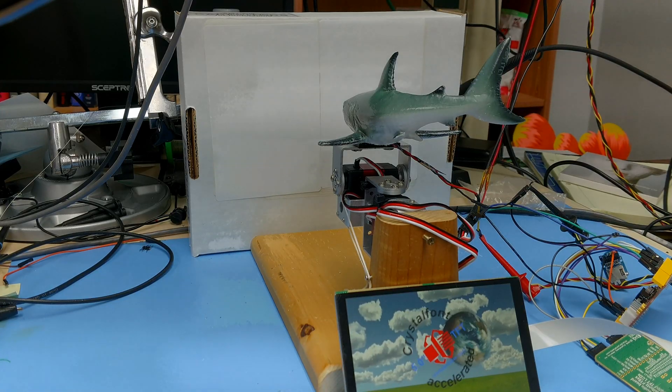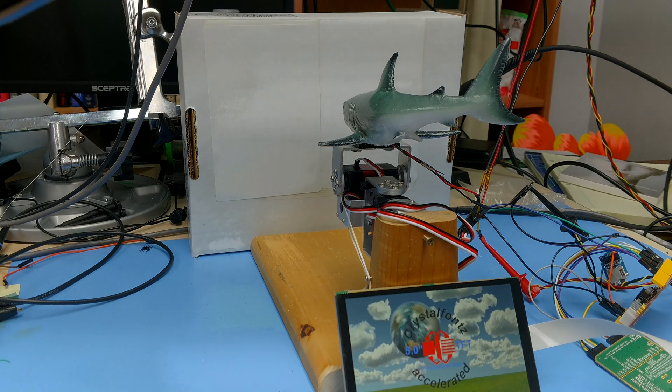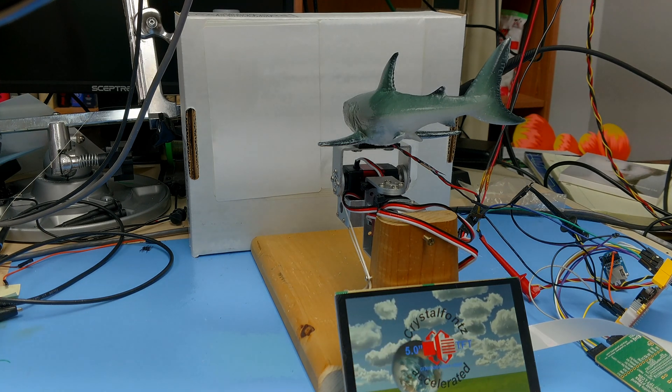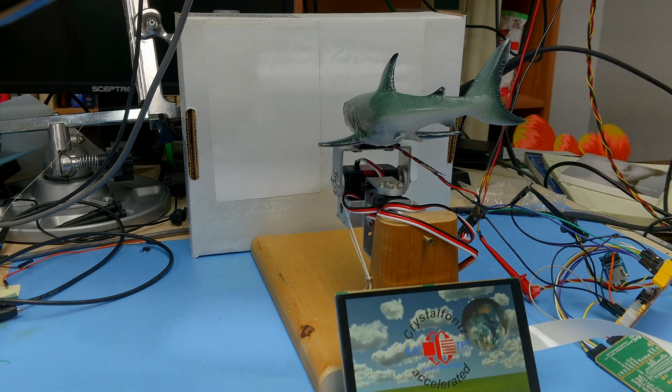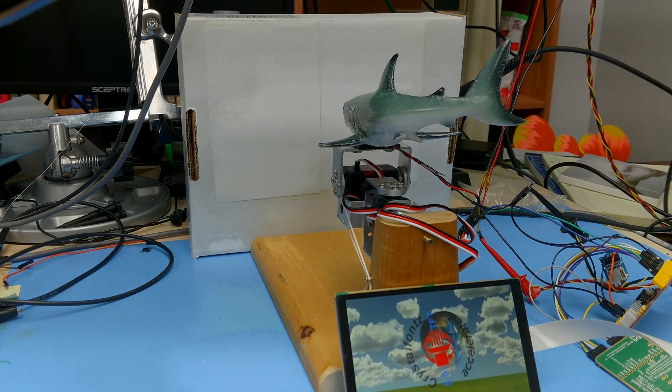We started with the demonstration code for this CrystalFonts 5-inch touch-enabled TFT, this guy here, and then we just added a few lines from the servo library. I'll go over the code in detail towards the end of the video.